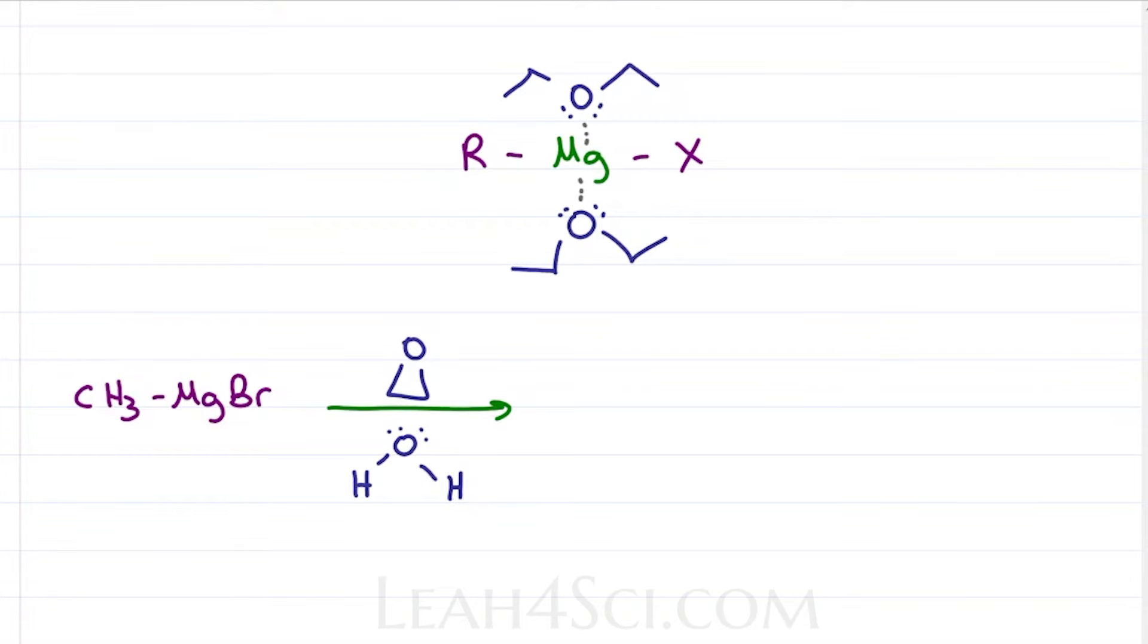The expected reaction of a Grignard with epoxide is for the Grignard to attack the epoxide and open the ring, but in the presence of a polar protic solvent like water, Grignard will go for the easier proton in an acid-base reaction to grab that hydrogen, give oxygen back its electrons, completely destroying the reagent.